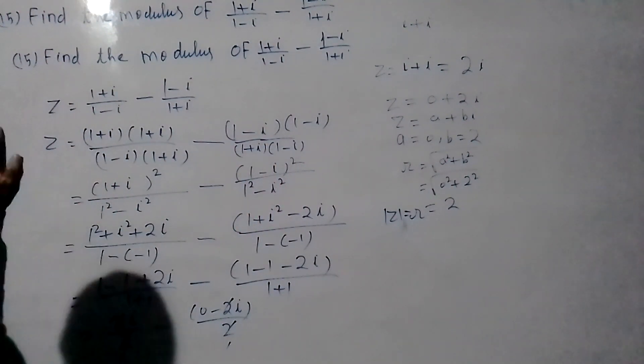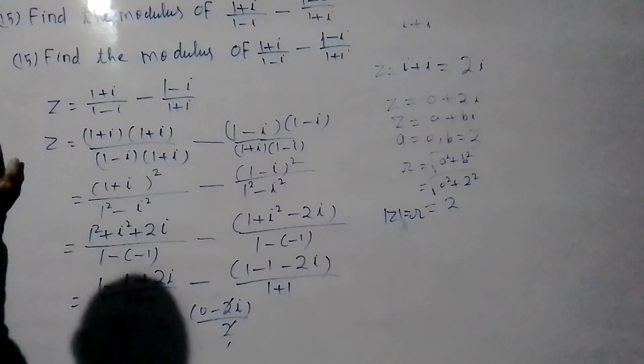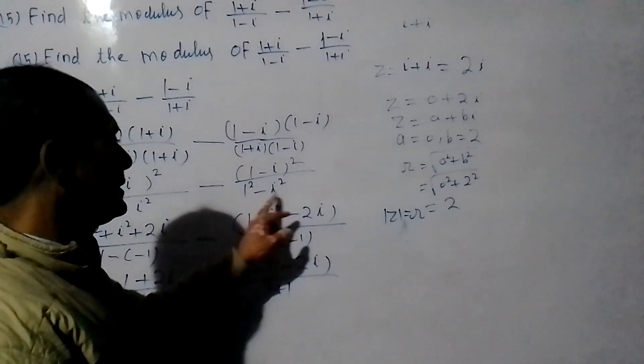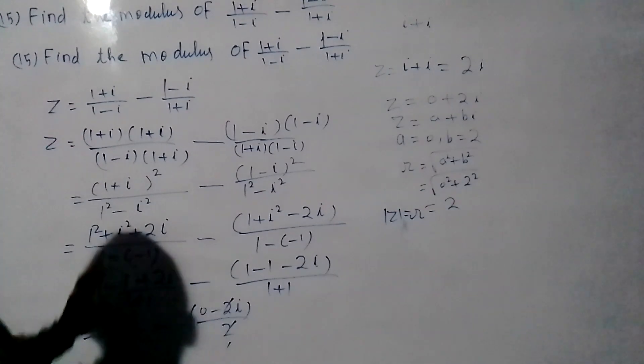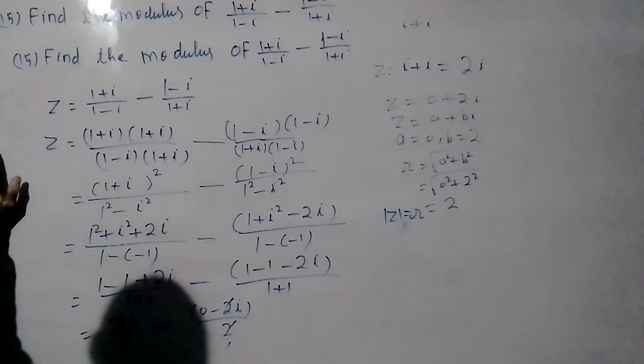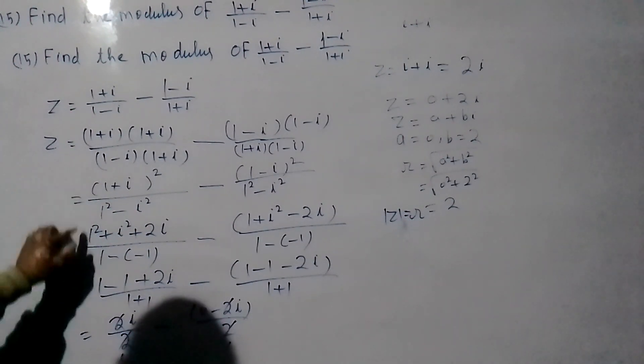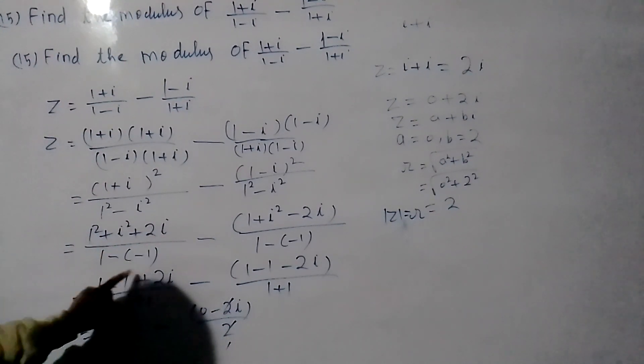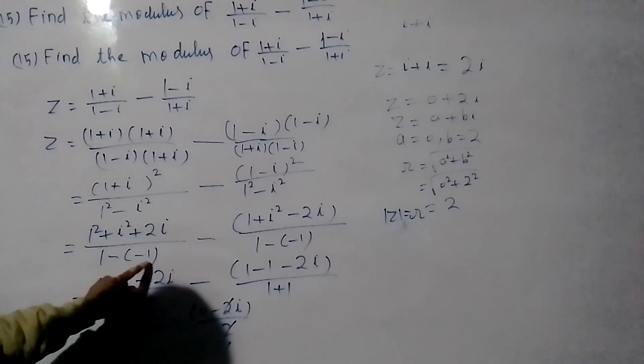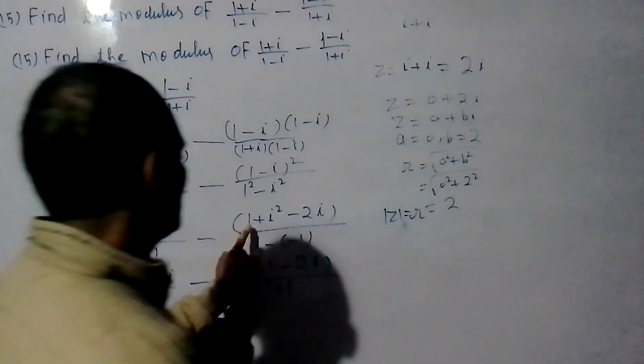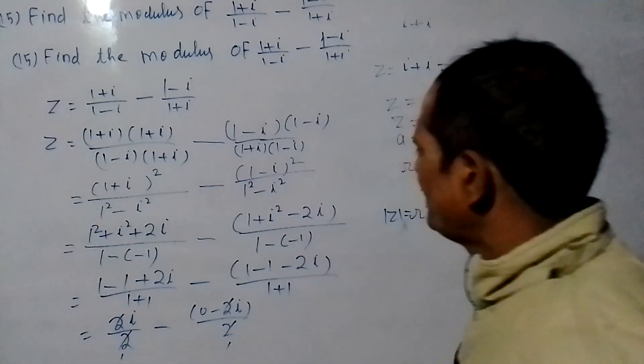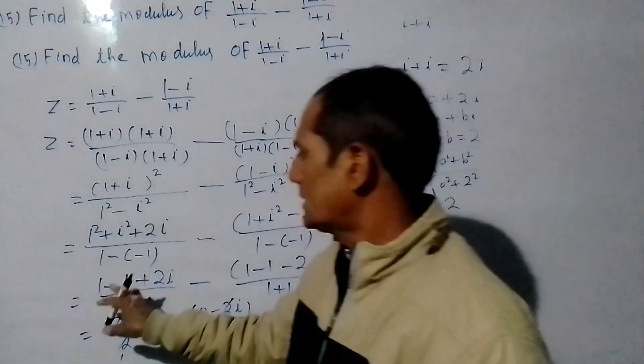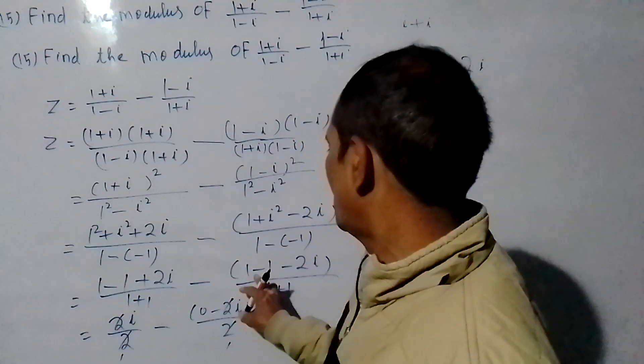We write 1 plus iota squared minus 1 minus iota squared over the denominator. Using the formula, this equals 1 plus 2 iota plus iota squared minus 1 plus 2 iota minus iota squared.